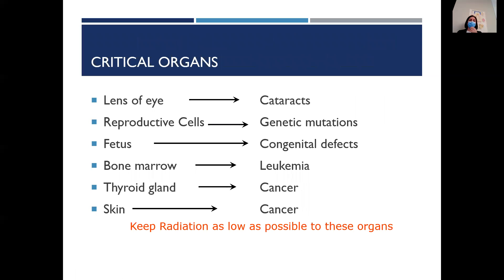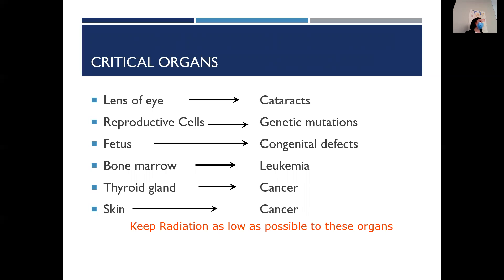This slide shows the disease that can result from radiation to each critical organ. If radiation is hitting the lens of the eye, the patient could get cataracts. If it's hitting the reproductive cells, there will be genetic mutation. If it's a fetus, there could be a congenital defect. If it's bone marrow, that affects white blood cell production and the patient can get leukemia. If it's the thyroid, they could get thyroid cancer. And if it's the skin, they could have an increased risk for skin cancer.